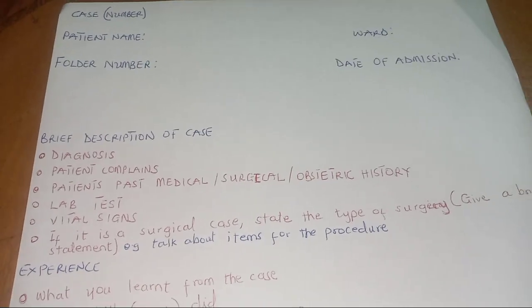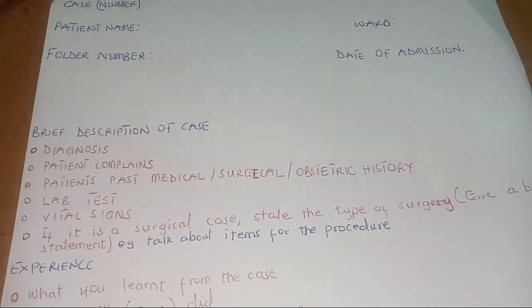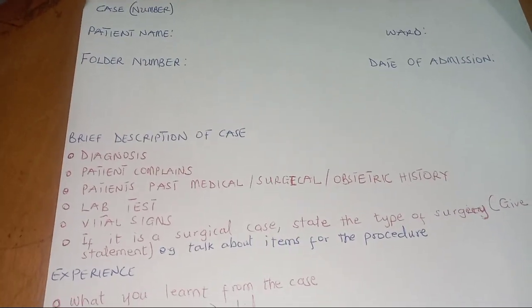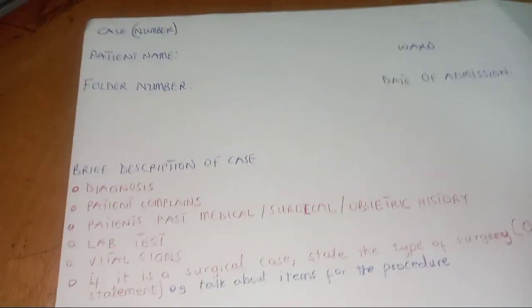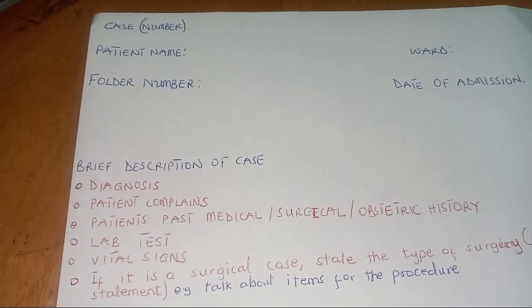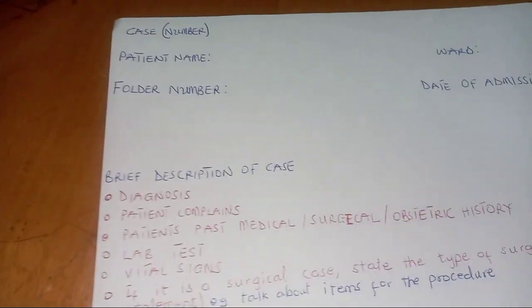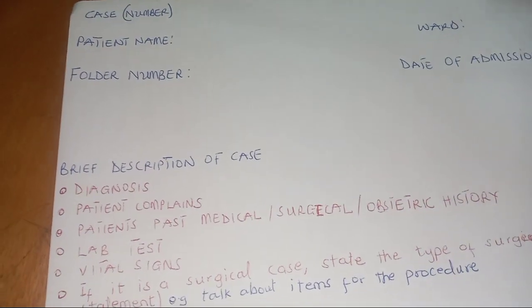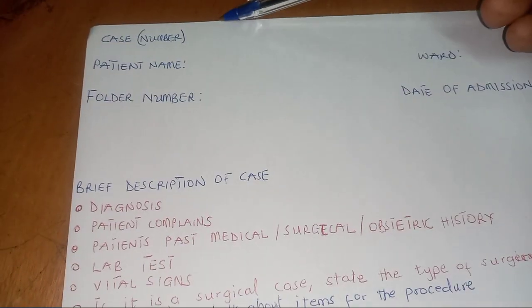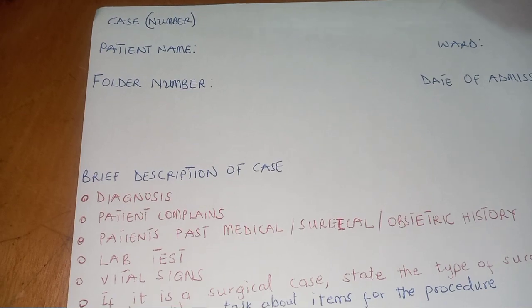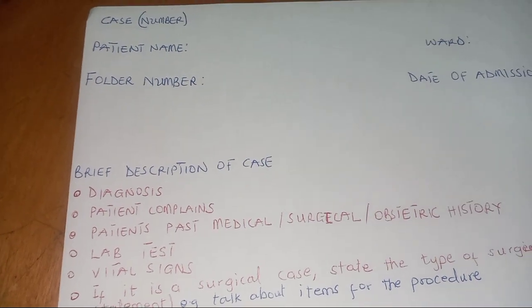Now let's move straight forward into the clinical case report. A case report is a brief report about a condition or a case. So here, case number — you just write 'Case 1.' This is the first case.